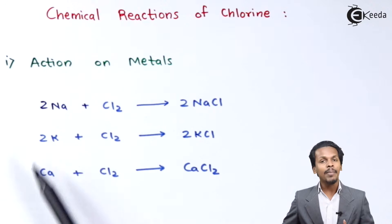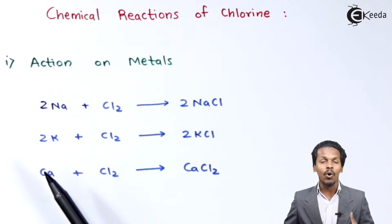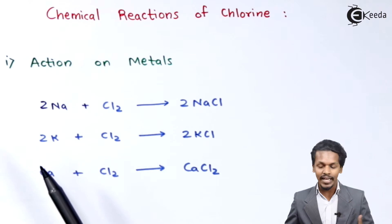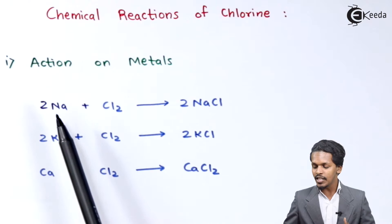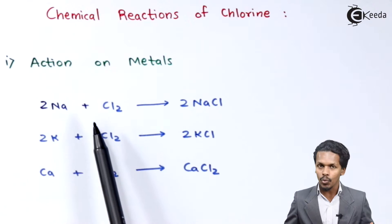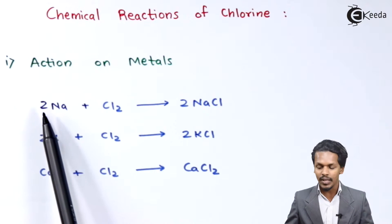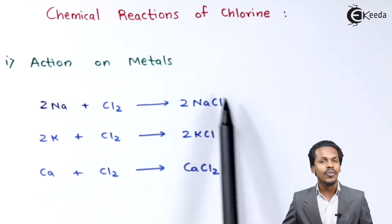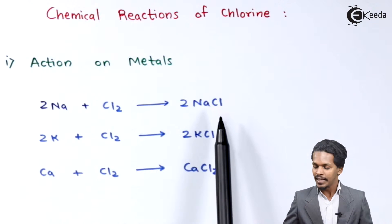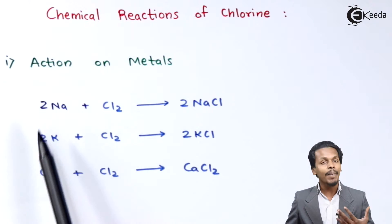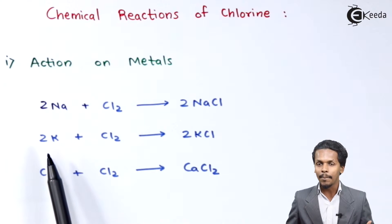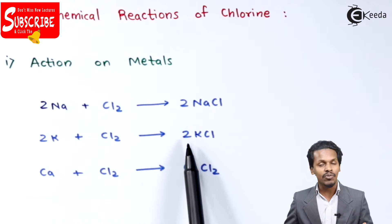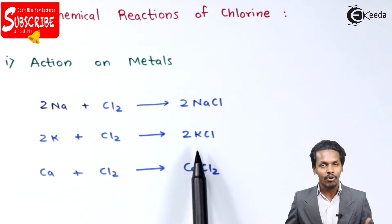Here I am going to talk about active metals — metals which are very much reactive. Sodium is very much reactive to chlorine: 2 moles of sodium reacts with Cl₂ to form 2 moles of NaCl, that is sodium chloride. Similarly, 2 moles of potassium reacts with chlorine to form 2 moles of KCl, that is potassium chloride.